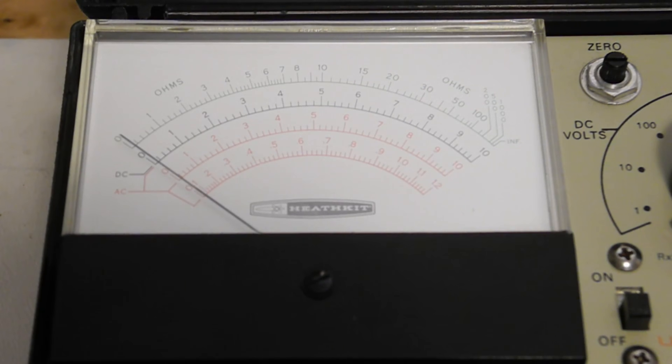Voltage is read off the meter applying the relevant multiplier for the selected range. For example, the zero to ten on the meter represents zero to a thousand volts on the thousand range and zero to one on the one volt range.